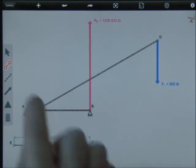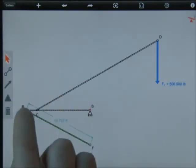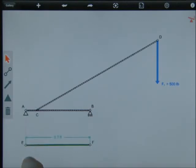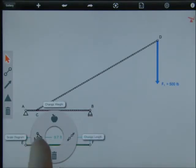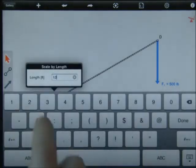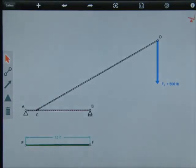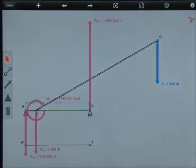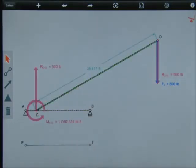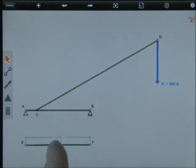Once my line is in place, I change my value. In this case, I'm gonna make it 12 feet. Now every member in my diagram is scaled to that reference. I don't need my line anymore, so I can simply delete it.